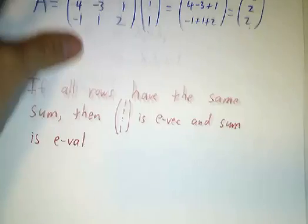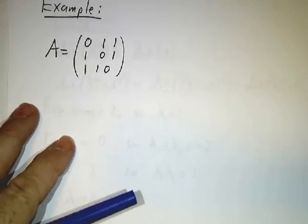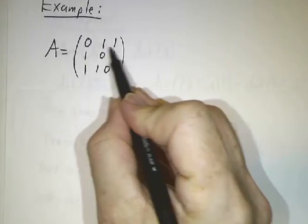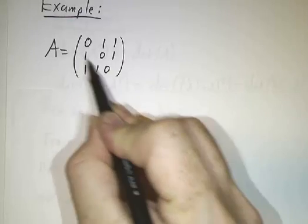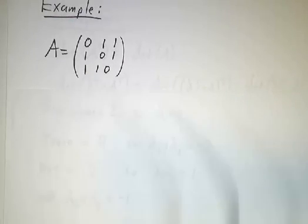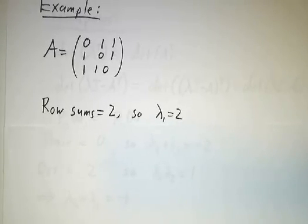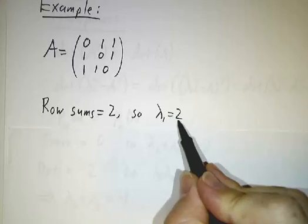For example, suppose we have the matrix [0,1,1 / 1,1,1 / 1,1,0]. We've seen this matrix before. The sum of the first row is 2, the sum of the second row is 2, the sum of the third row is 2. So all the rows add up to 2, and that means that 2 has to be an eigenvalue.